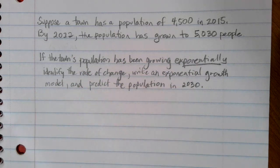The problem here is specific about which type of growth it wants you to use. It says if the town's population has been growing exponentially, identify the rate of change, write an exponential growth model, and then predict the population in 2030.